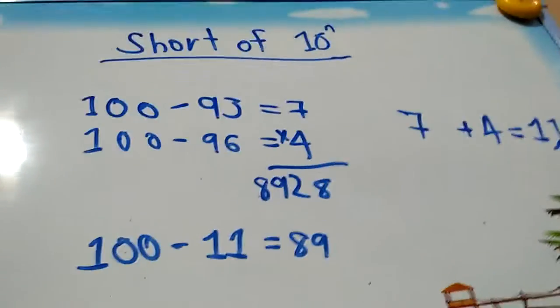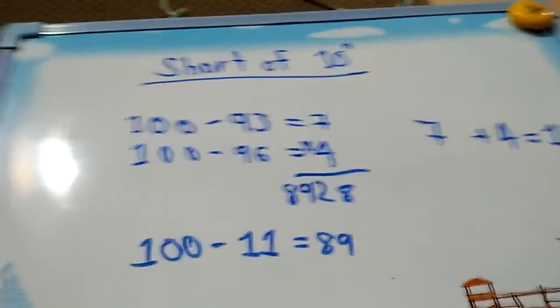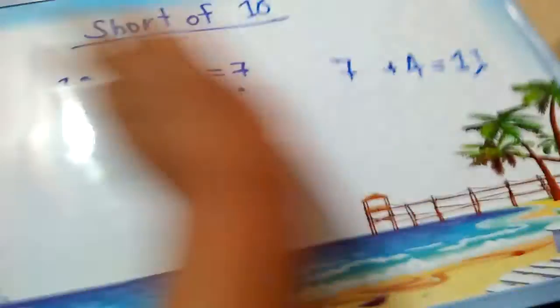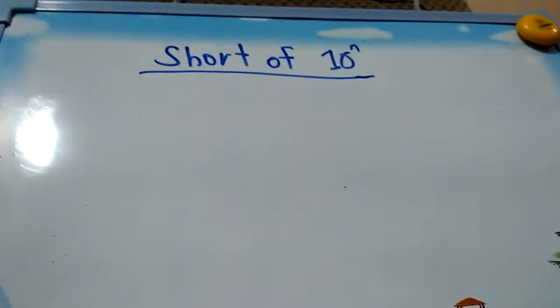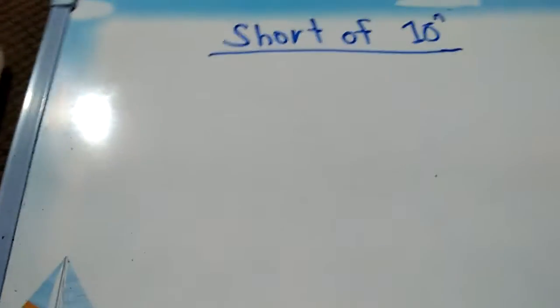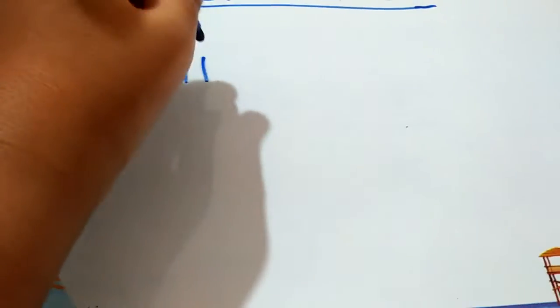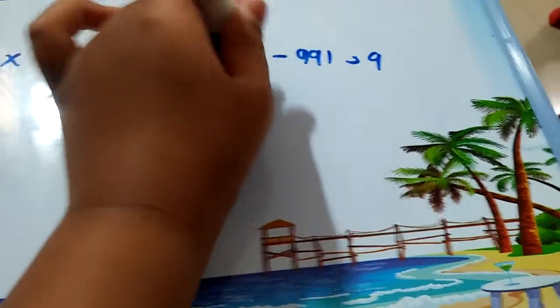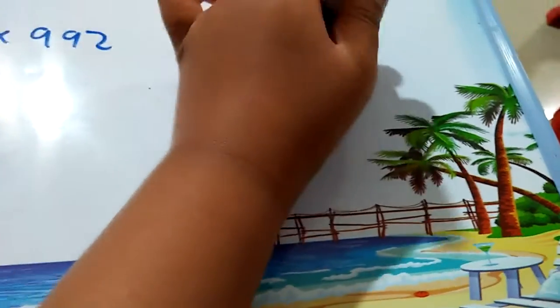Now we need to check something which is the short of 10 to the end. Let's complete that 991 times 992 example. So here, the short of 1000 is equal to 9, and 1000 minus 992 is equal to 8.